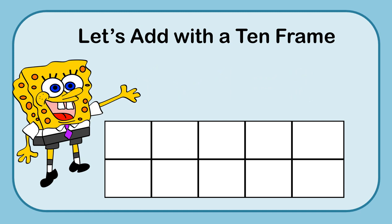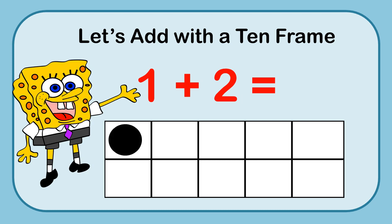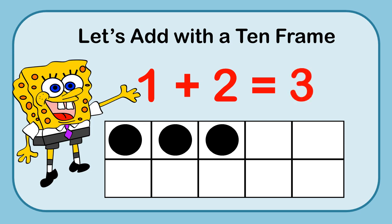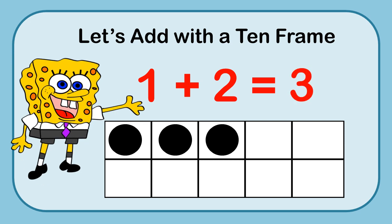Let's take another equation: 1 plus 2. Let's go ahead and use our markers. We're going to put 1, and then 2 more, and let's count them up: 1, 2, 3. So 1 plus 2 equals 3.